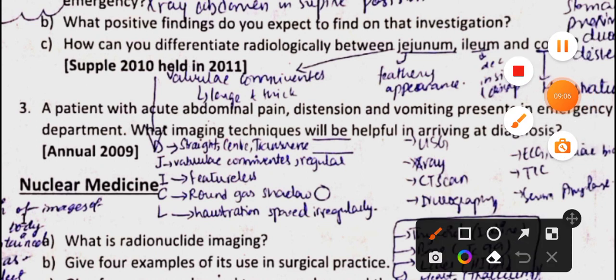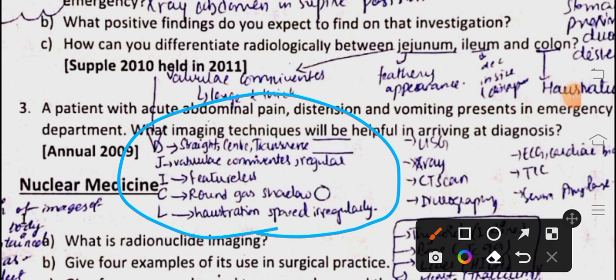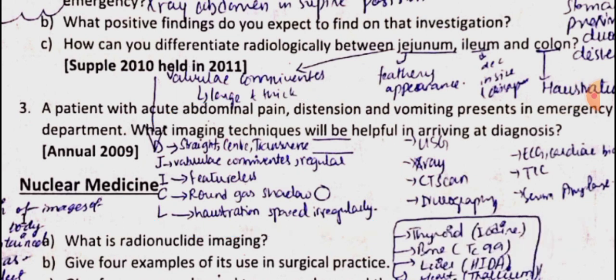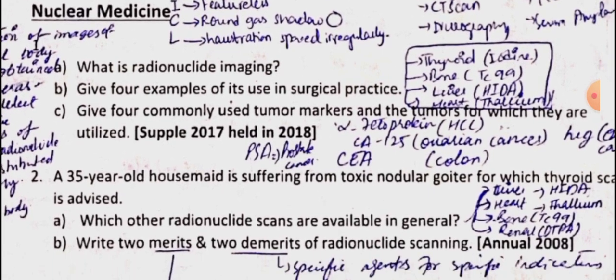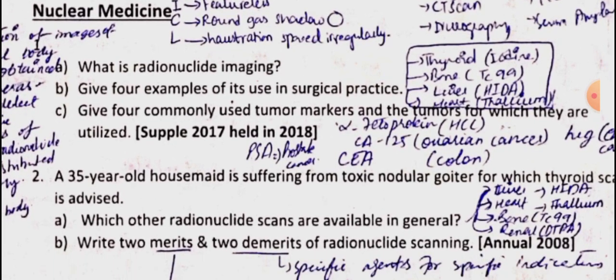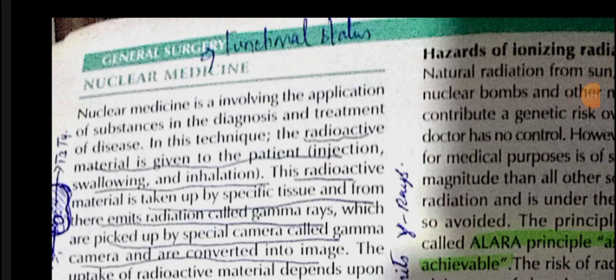Now we discuss nuclear medicine. Nuclear medicine is used for the diagnosis and treatment of disease. We move from radiology to nuclear medicine as the next topic. Radioactive materials are administered to patients.